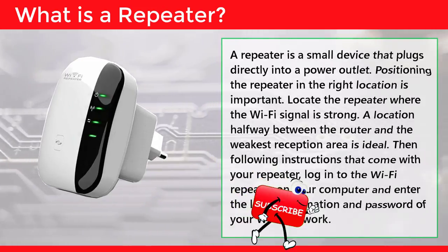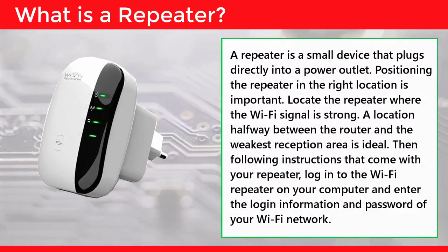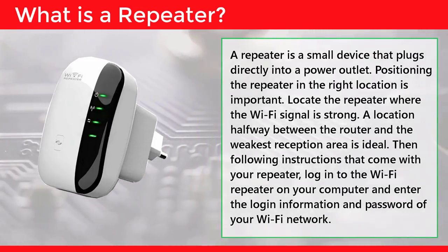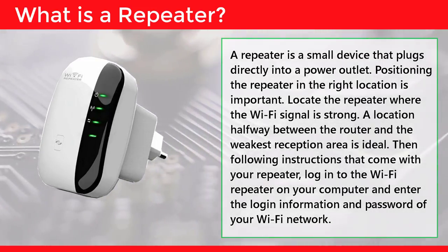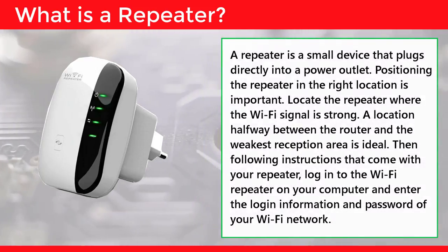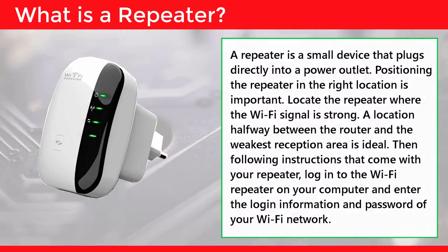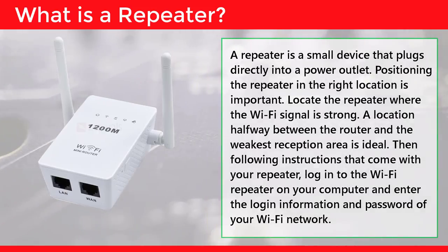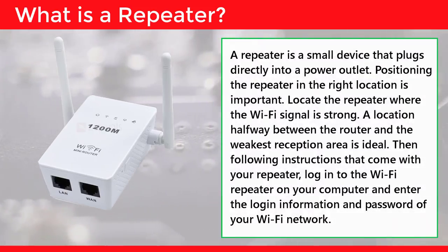A repeater is a small device that plugs directly into a power outlet. Positioning the repeater in the right location is important. Locate the repeater where the Wi-Fi signal is strong. A location halfway between the router and the weakest reception area is ideal.